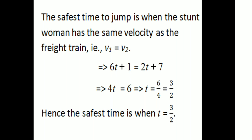Setting 6t plus 1 equals 2t plus 7: 6t minus 2t equals 7 minus 1, so 4t equals 6, then t equals 6 by 4, which is 3 by 2. So t equals 3 by 2. Hence the safest time is when t equals 3 by 2. You can find the best time by setting V1 equal to V2 and solving for t.